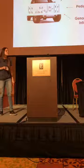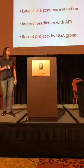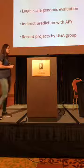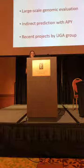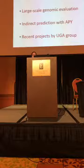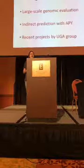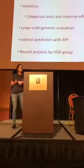Now that you know what single-step is, I'm going to go through what I'm going to talk about today. I'm going to talk about some validation methods that we use to confirm that genomics is performing better than traditional evaluation. I'll talk about some specific scenarios like for binary traits or categorical traits like calving ease, and for traits that have maternal effect. I'll also talk about indirect predictions like DGVs, and touch on some recent projects we have at UGA.